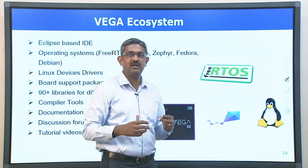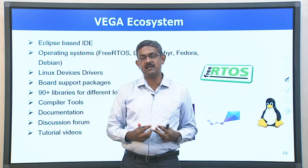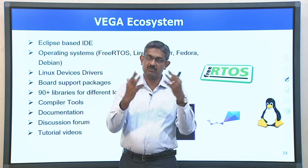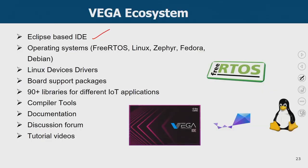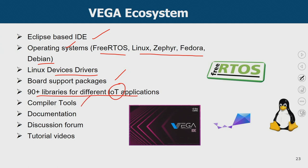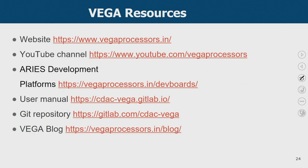The whole Vega ecosystem — since it is funded by the central government project — makes all resources available for hands-on work. It uses an Eclipse-based IDE, supports free RTOS, Linux, Sapphire, Fedora, Debian, and other operating systems. Linux-based device drivers, board support packages, libraries for different IoT applications, compiler tools, a discussion forum, documentation, and tutorial videos are all available. You can refer to the Vega processor website, a dedicated YouTube channel, the Aries development platform pages, a detailed user manual, a Git repository for code, and the Vega blog.